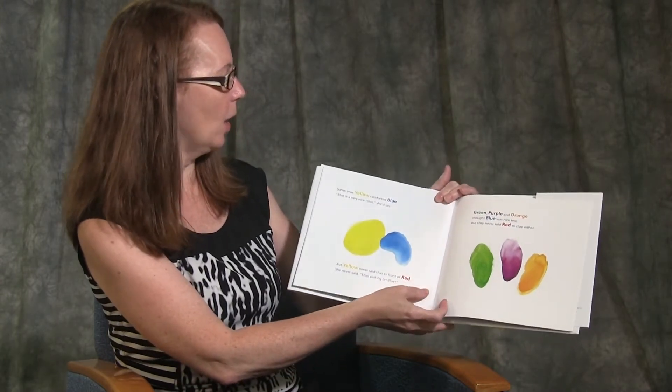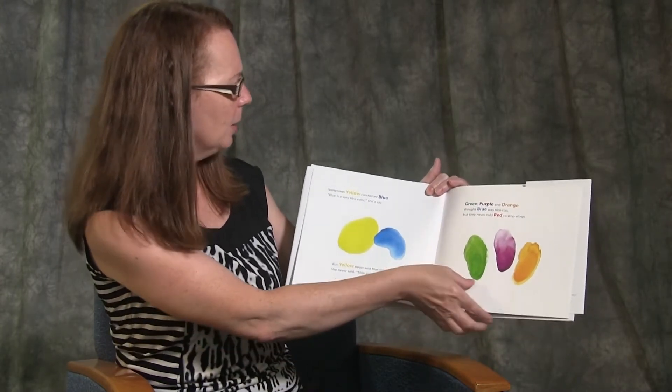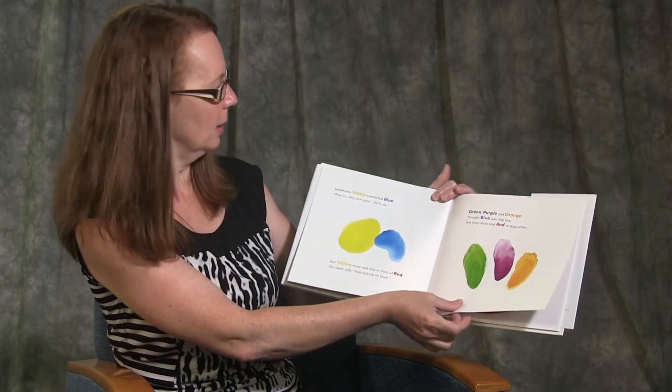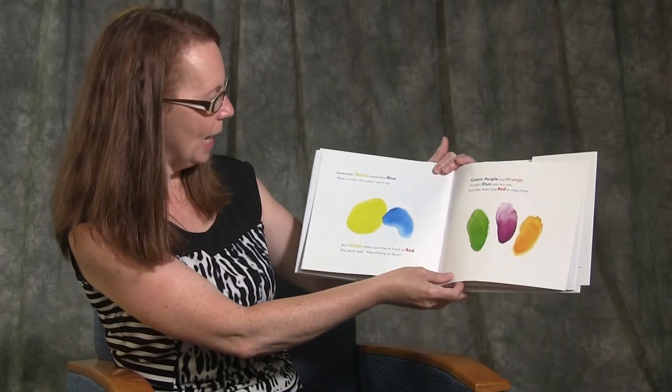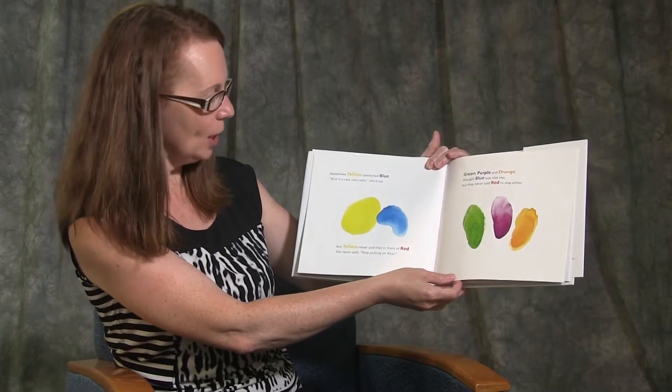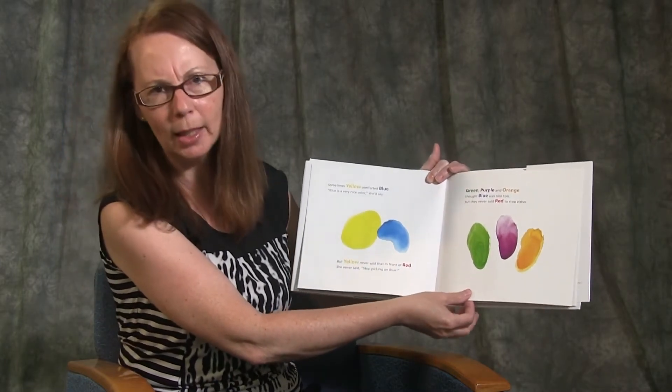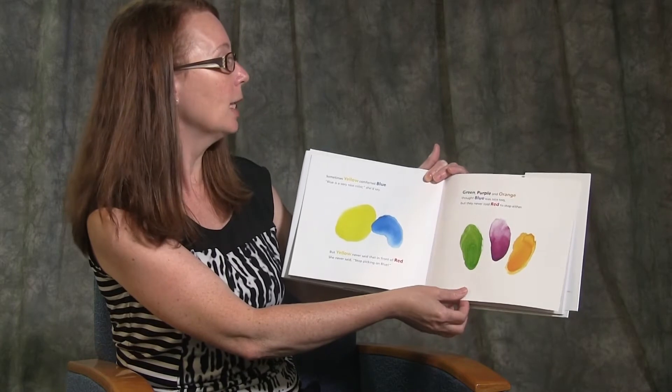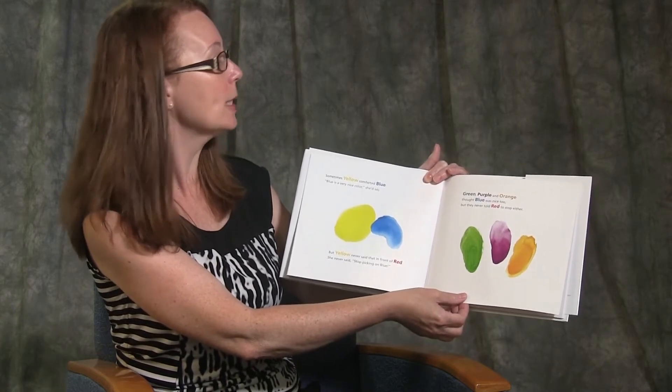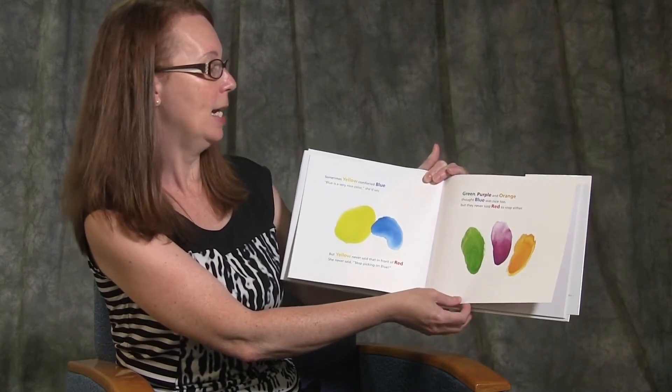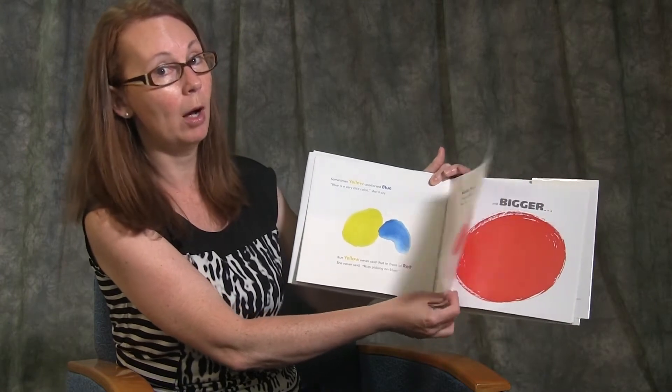Sometimes yellow comforted blue. Blue is a very nice colour, she'd say. But yellow never said that in front of red. She never said, stop picking on blue. Green, purple and orange thought blue was nice too, but they never told red to stop either.